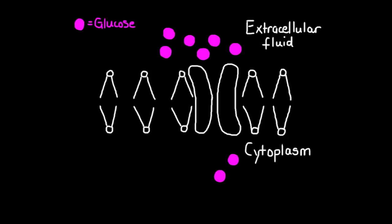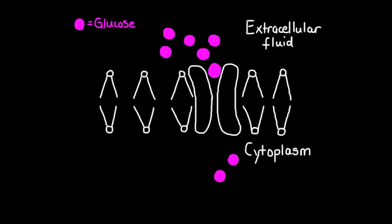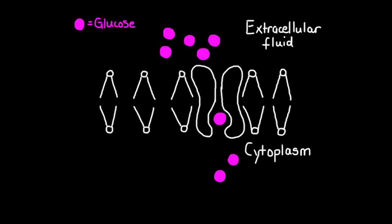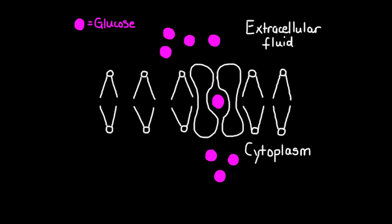In facilitated diffusion, molecules are still moving down the concentration gradient from a high concentration to a low concentration. However, they require the aid of a carrier protein in order to do so. In this example, we see glucose moving from the extracellular fluid, where it has a high concentration, to the cytoplasm where it has a lower concentration. Notice the conformational shape change in the carrier protein as the glucose moves through the membrane.